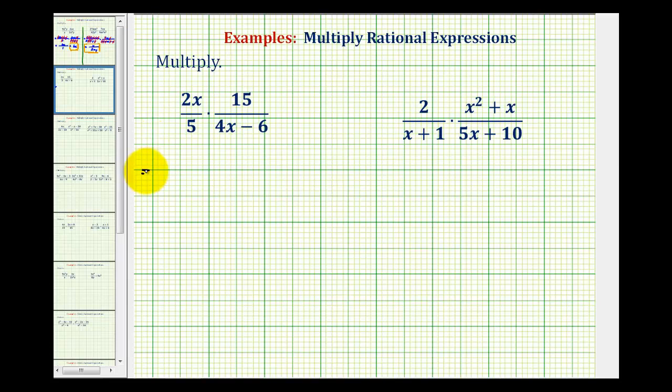So for this first example, we're going to write 2x as 2 times x, 5 is prime. The prime factorization of 15 would be 3 times 5.